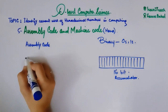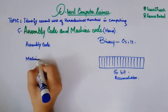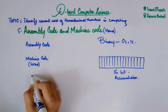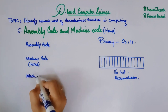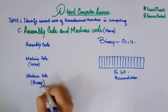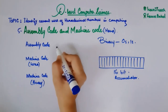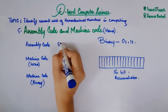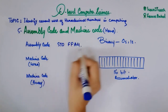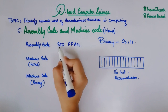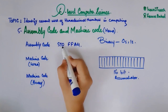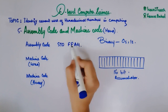Let's compare the three codes. I am writing assembly code, then machine code that is in hexadecimal, and then finally the binary code or the machine code in binary form. Let's compare the three codes for doing the same work. I have an instruction STO FFA4. This STO is basically a mnemonic used in assembly code in order to store a value in an accumulator. So STO is a keyword and FFA4 is the value.